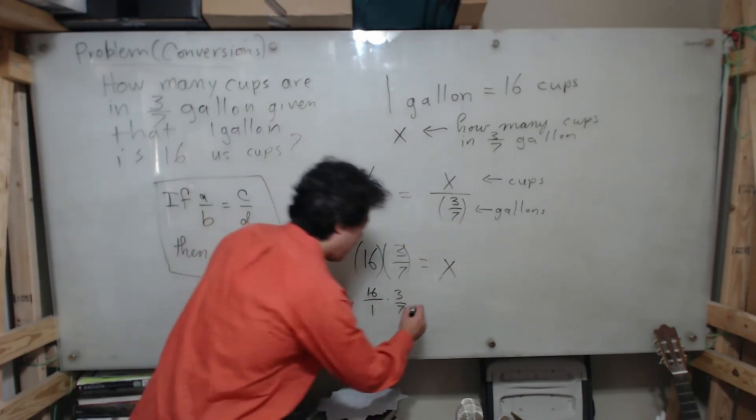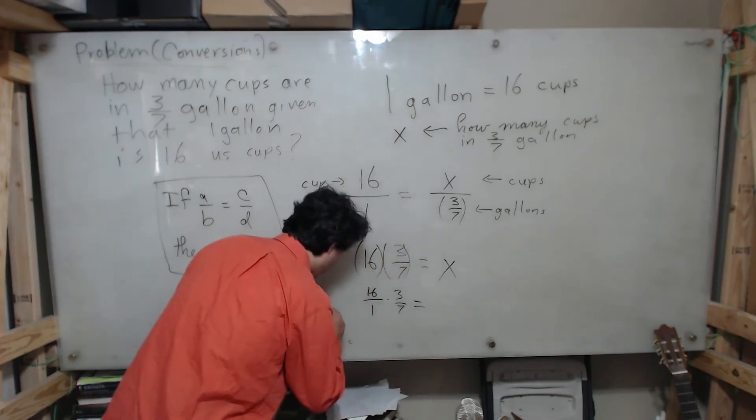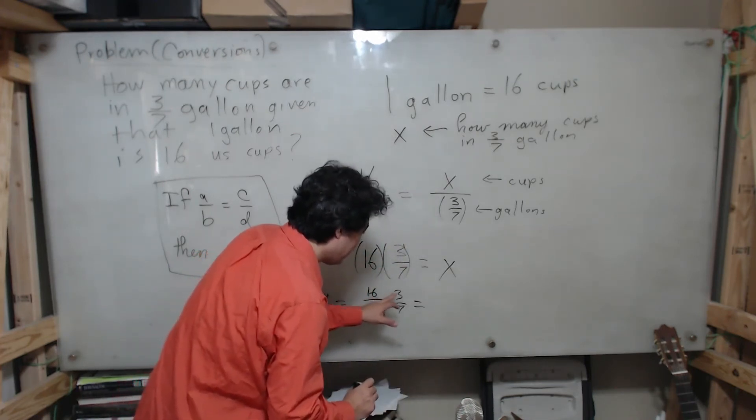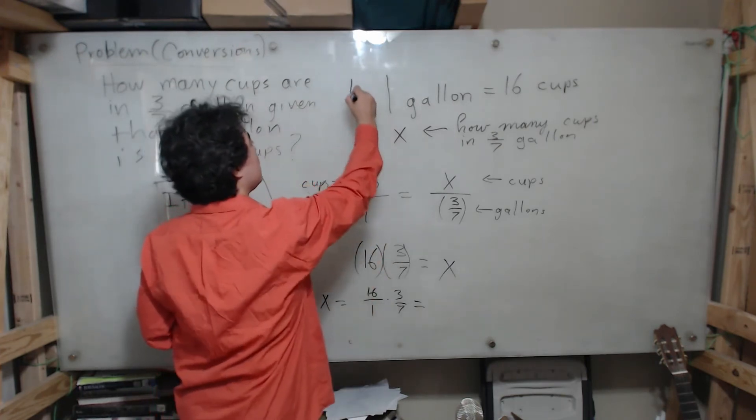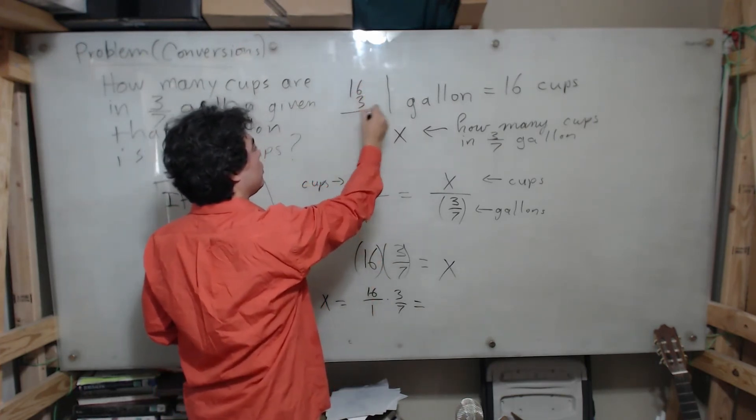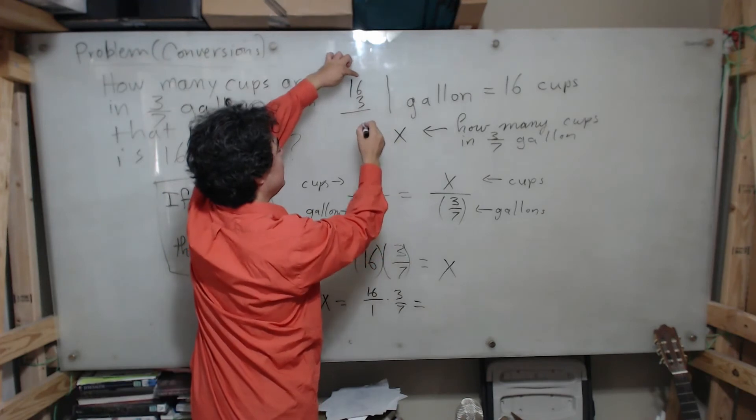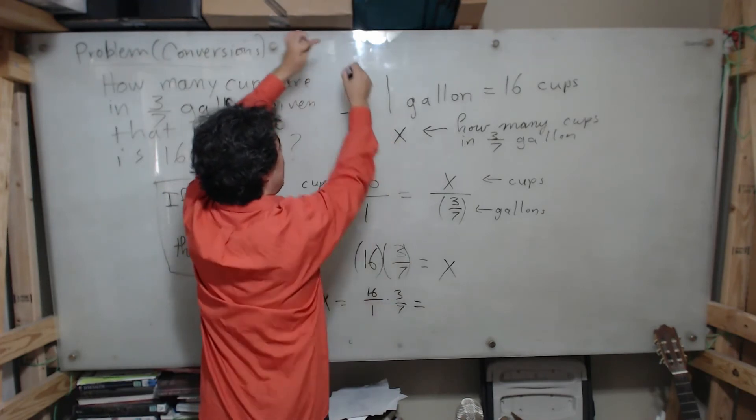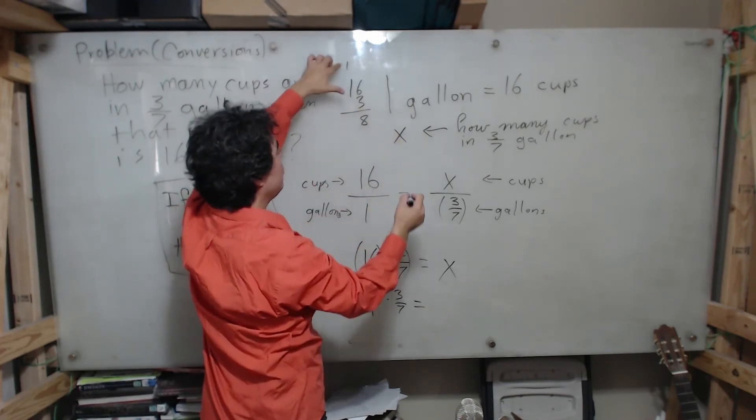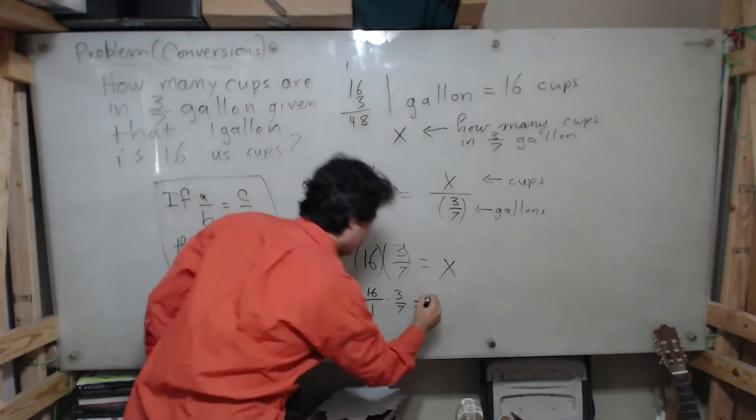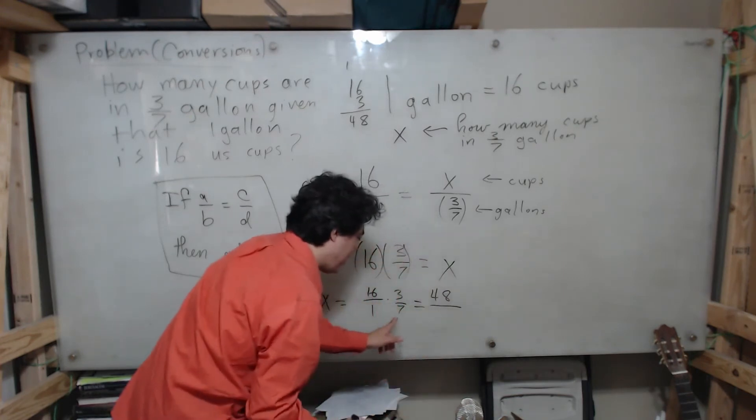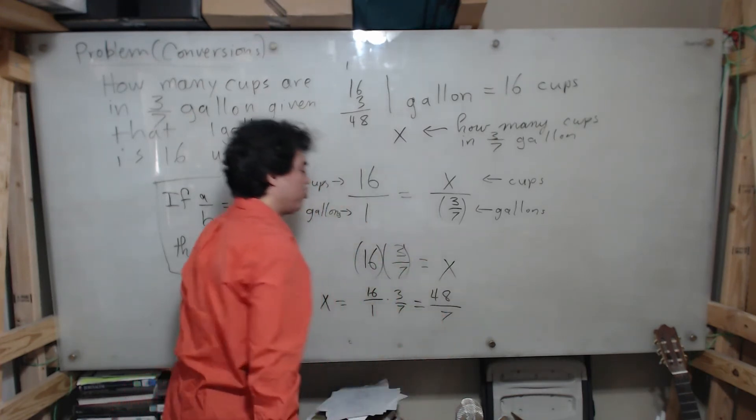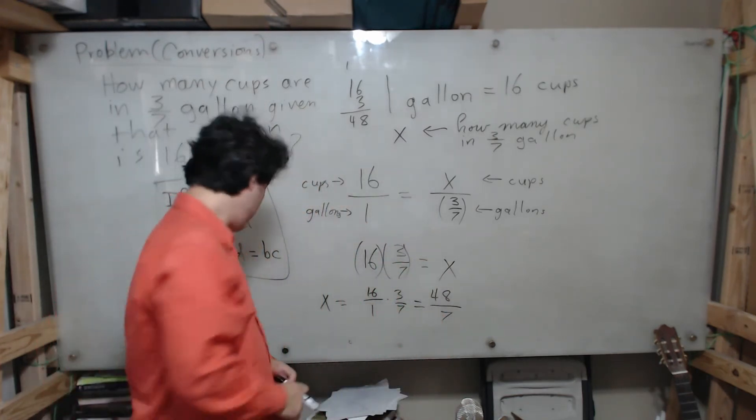Now we're going to multiply. How do we multiply fractions? We just multiply them across. 16 times 3 - let's do that over here: 3 times 6 is 18, I carry the 1, 3 times 1 is 3 plus 1 is 4, so 3 times 16 is 48. And 1 times 7 is 7. So now we know that our x is 48 over 7.